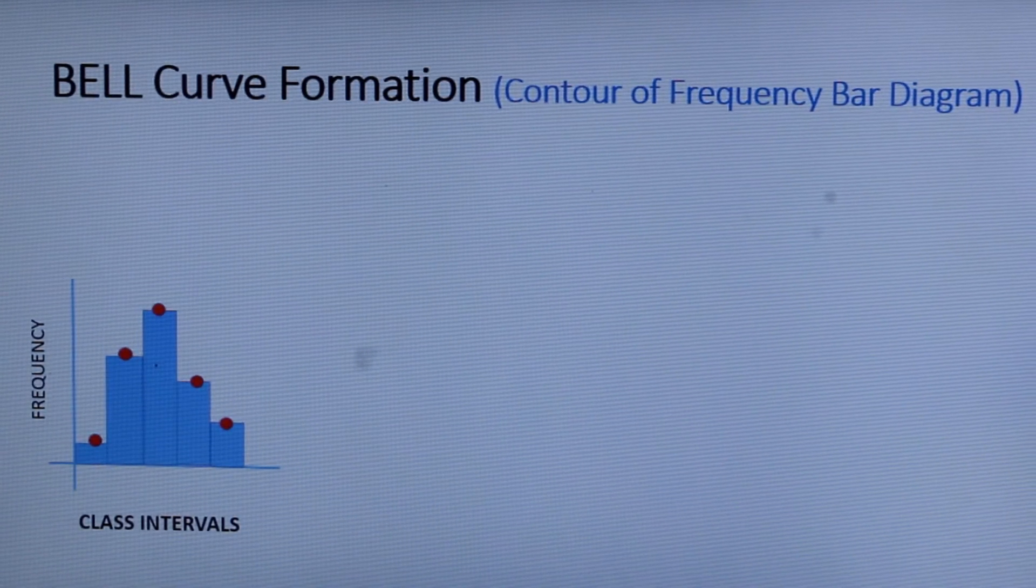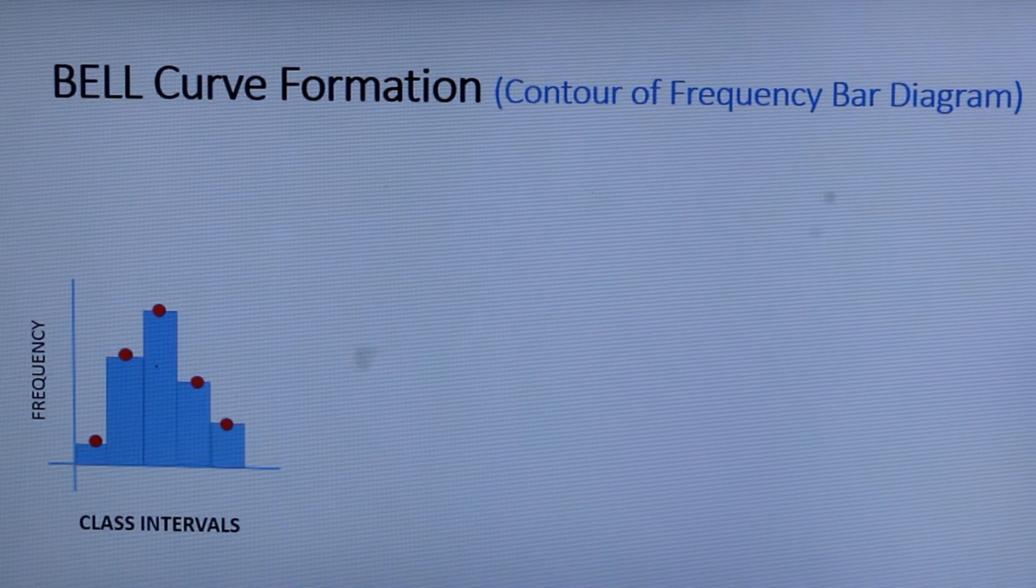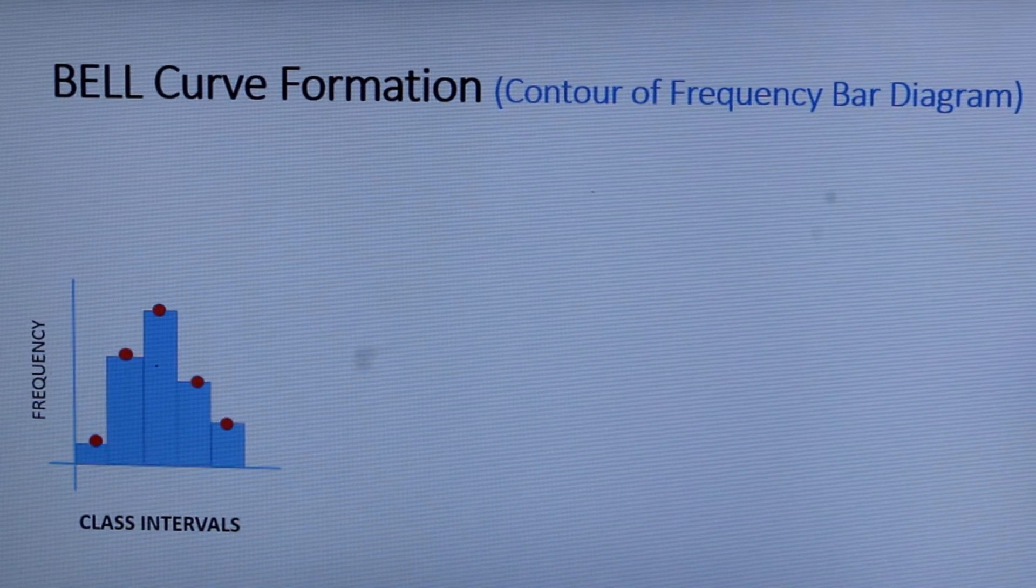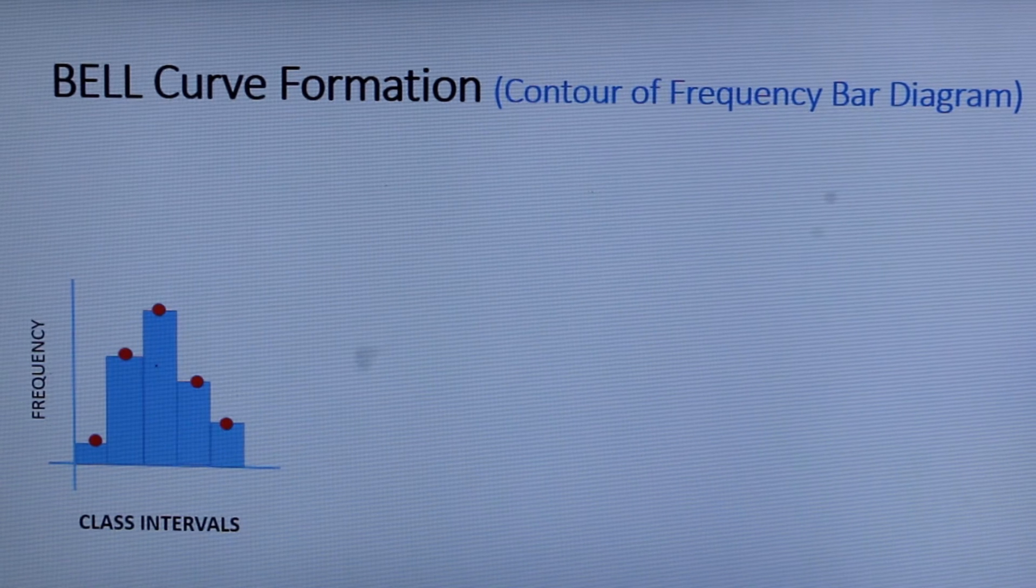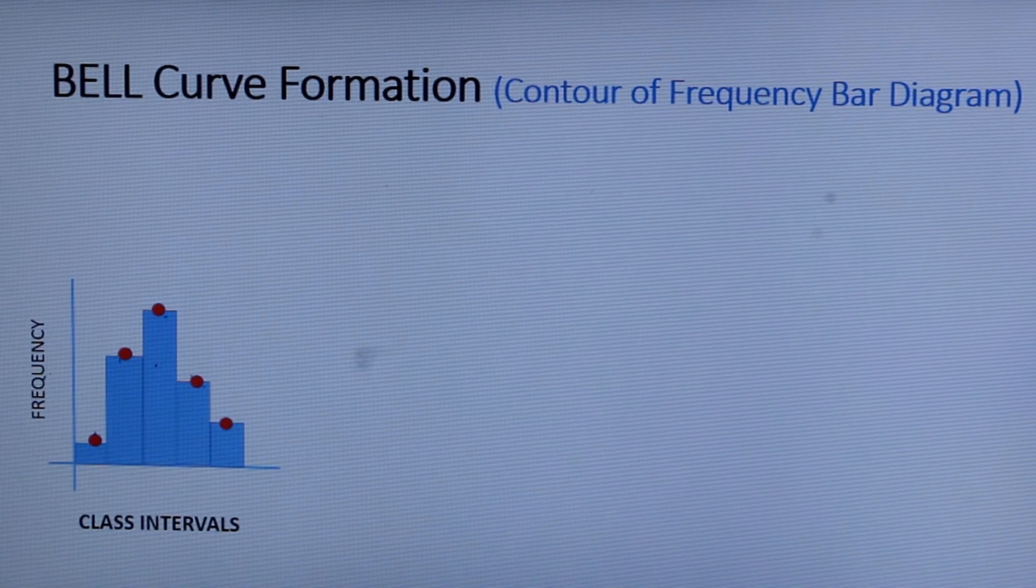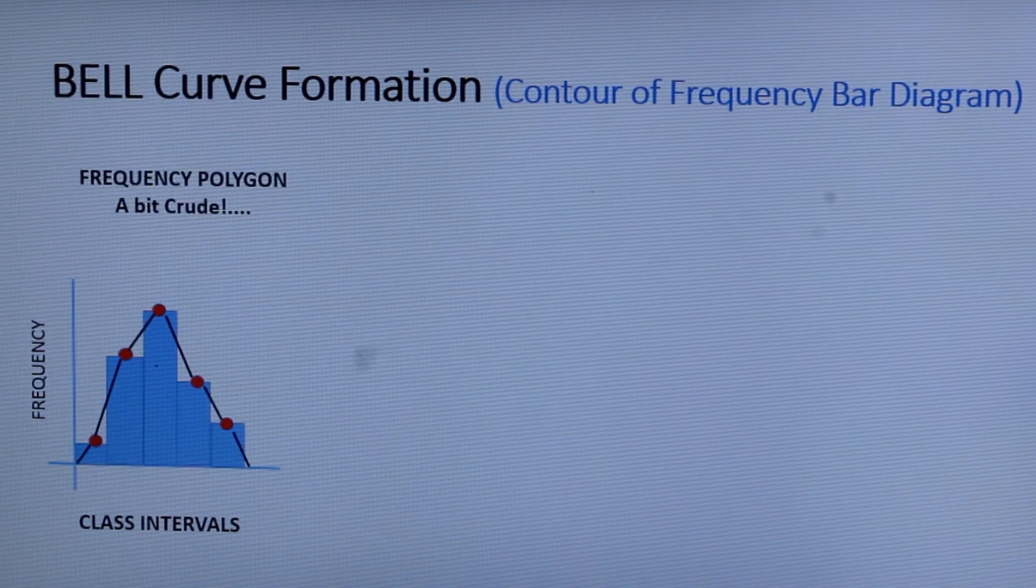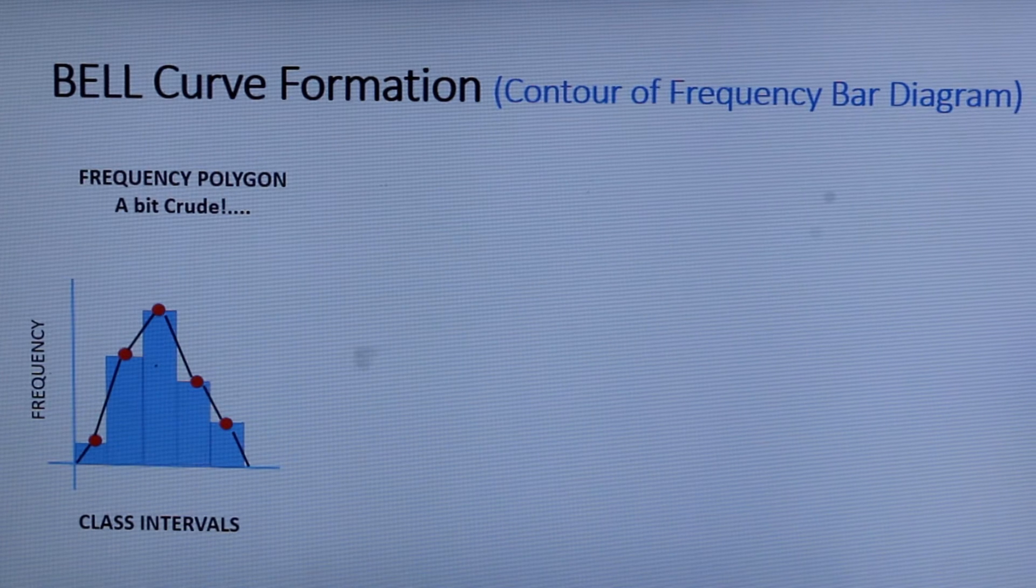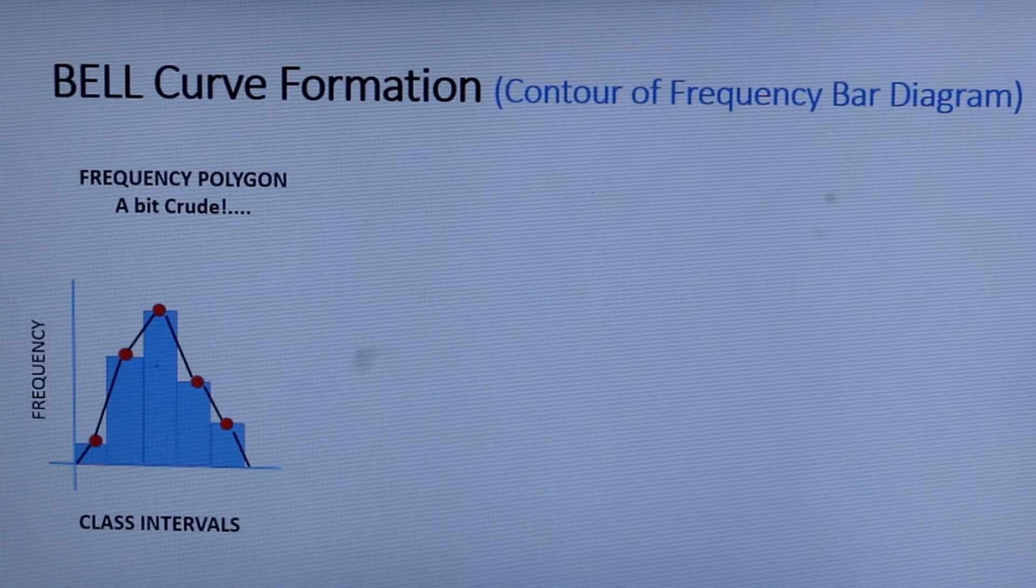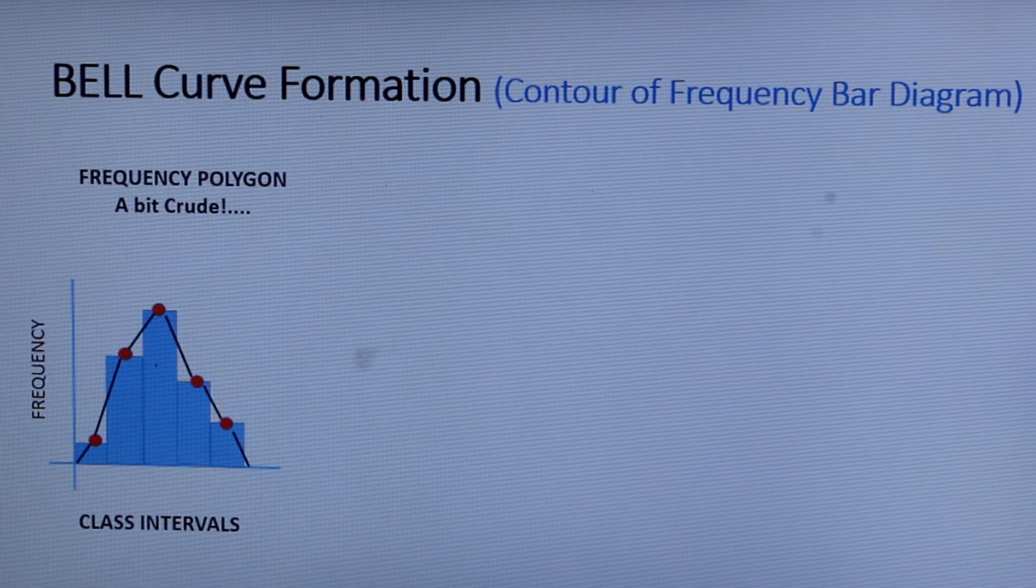So in the last session we saw about frequency distribution and frequency polygon. Frequency polygon is just joining the midpoints of frequency bar diagram. You can see this is a bit crude but if you have more data points and if you are able to create more class intervals.